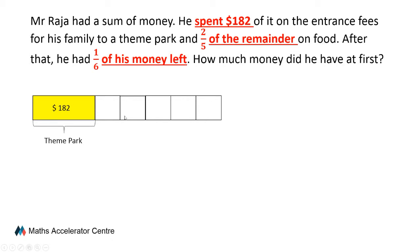Two-fifths of the remainder was spent on food, so we highlight two units and indicate that these two units were spent on food. The last set of keywords informs us that he had one-sixth of his money left.